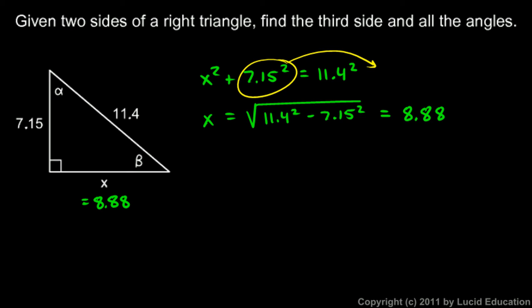And then we're also told to find all the angles. Well, we know this angle is 90 degrees, so nothing to find there. But we can find alpha and beta. Here's alpha. We'll do that first. Now look at alpha. We know all three sides now, but just in case we made a mistake in this calculation, I'm going to use this side and this side to find alpha.